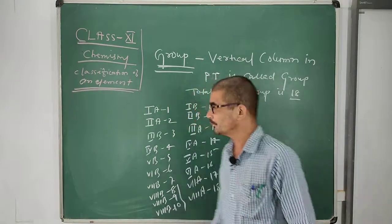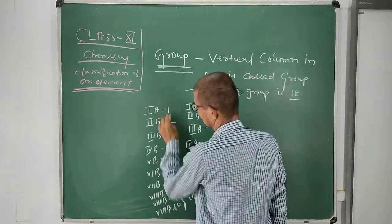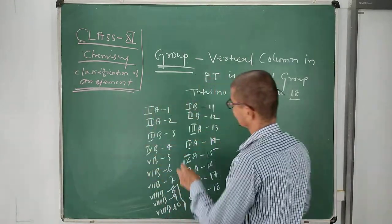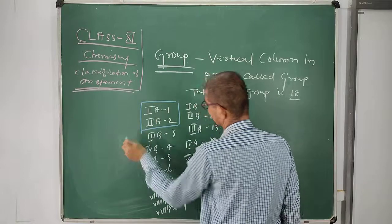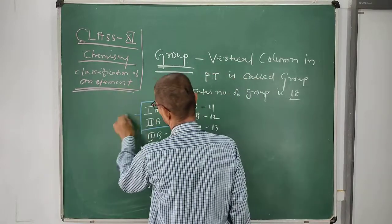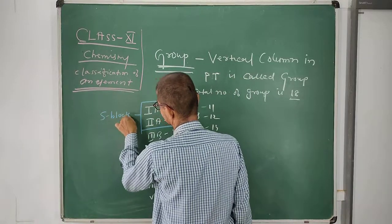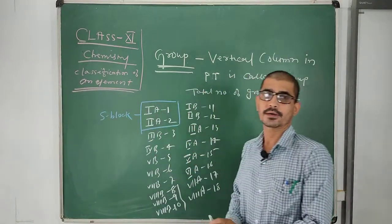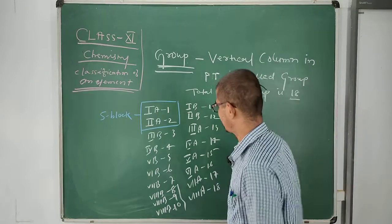So total number of groups is 18. Now, group first A and second A belong to the S block. Total blocks in the modern periodic table are four: S, P, D, and F.